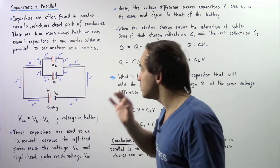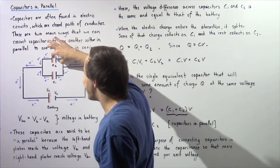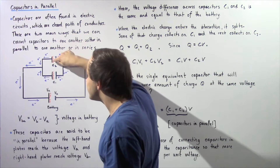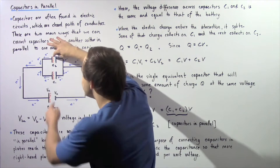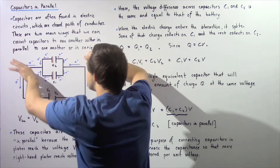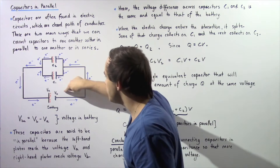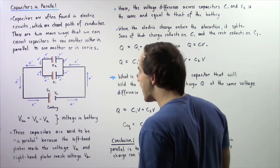Electrons cannot actually travel from one plate to the other because of the separation between the two plates. But because there will be a collection of electrons on one side, those electrons will push the electrons on the opposite plates toward the higher potential voltage. Electrons from these plates within our parallel plate capacitors travel in this direction, collect at the intersection, and travel toward the higher voltage. Electrons travel from VB to VA, from the lower potential to the higher potential.